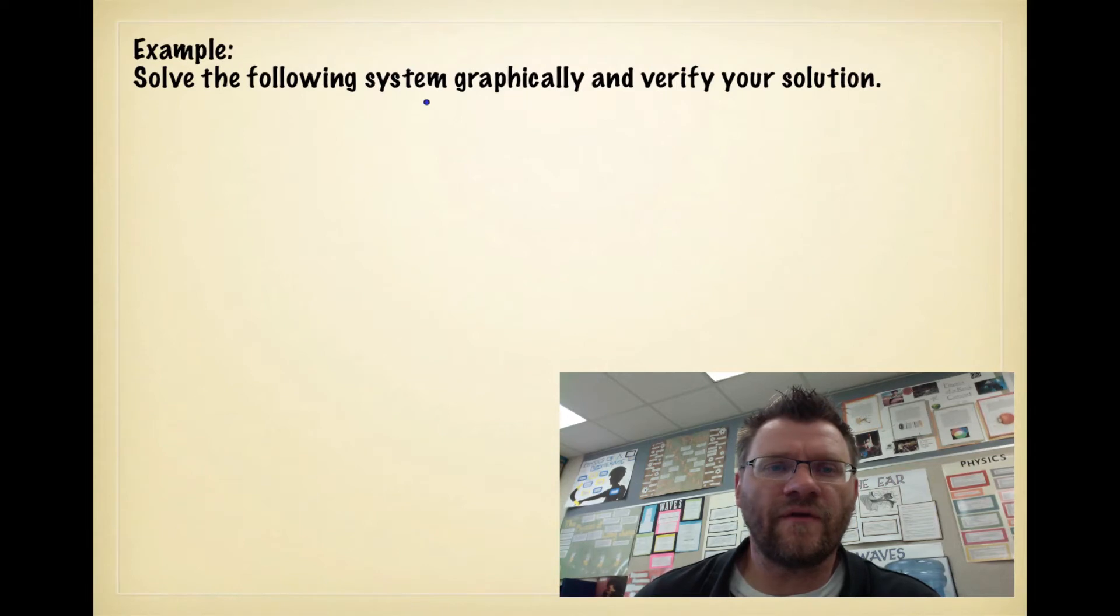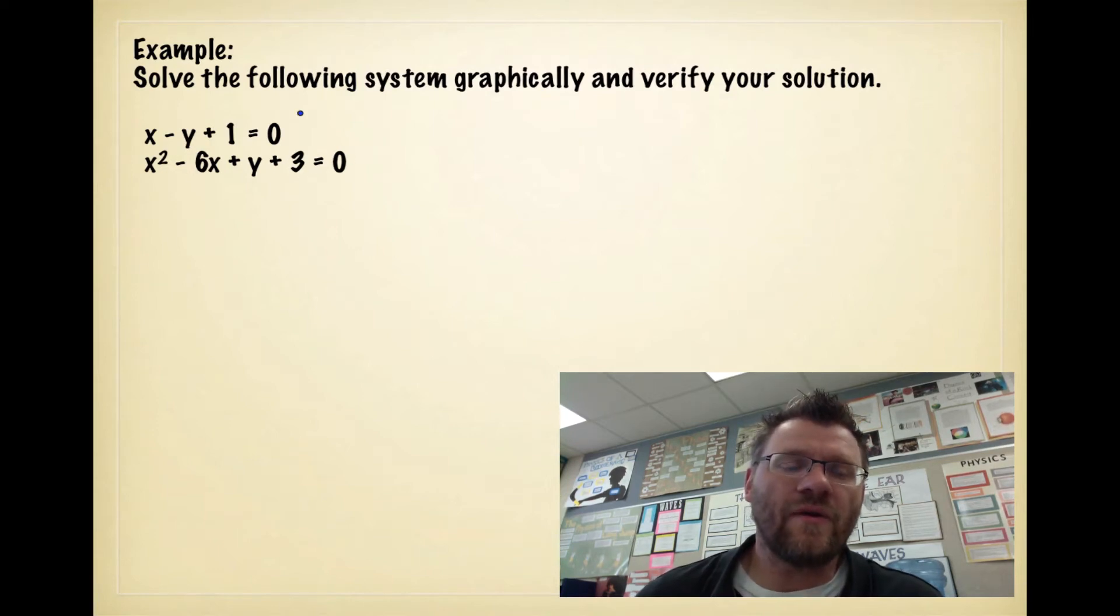For example, it says solve the following systems graphically and verify your solution. We have x minus y plus 1 equals 0, and x squared minus 6x plus y plus 3 equals 0. So instead of graphing these by hand, we're going to be smart and graph these using a graphing calculator, mostly desmos.com.